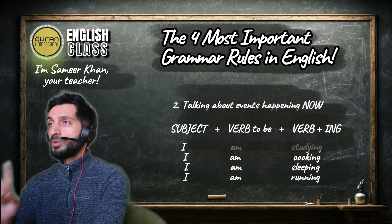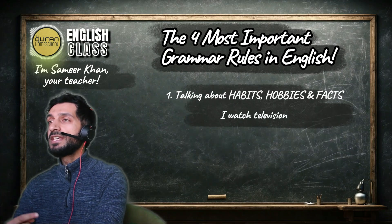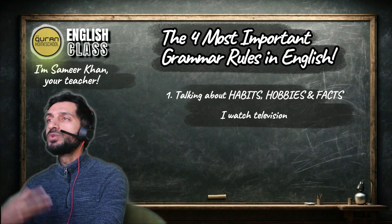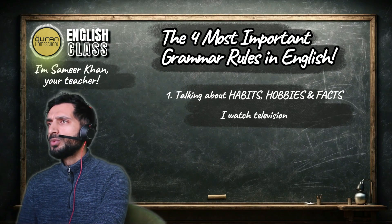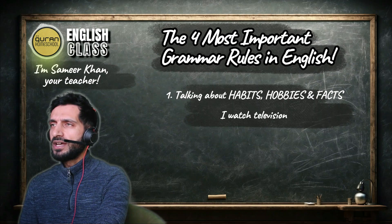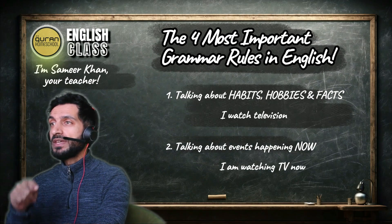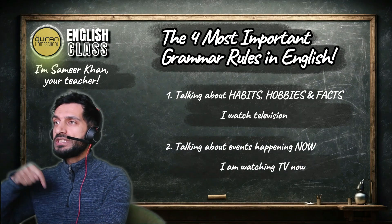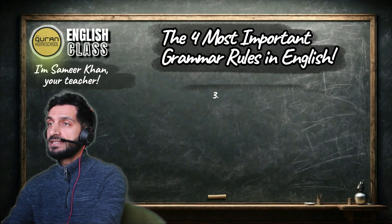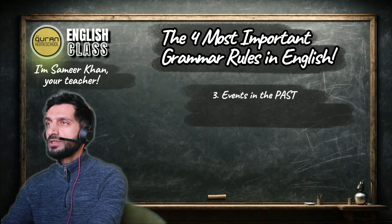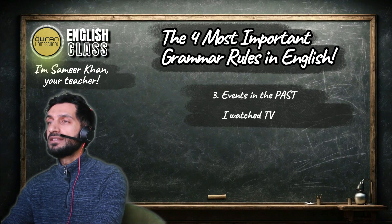Number one was speaking about things which happen usually: I watch television on the weekend, in my free time, etc. Number two: I am watching TV now. Number three is the past tense — and watch is easy, you just have to add -ed: watch becomes watched.